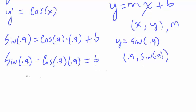Now let's go ahead and solve for b in this problem. So we have sine of 0.9 minus cosine of 0.9 times 0.9 is equal to our b. So that's what our b is going to be. So let's just go ahead and now write out everything that we needed to find. We needed to find m and we needed to find b.